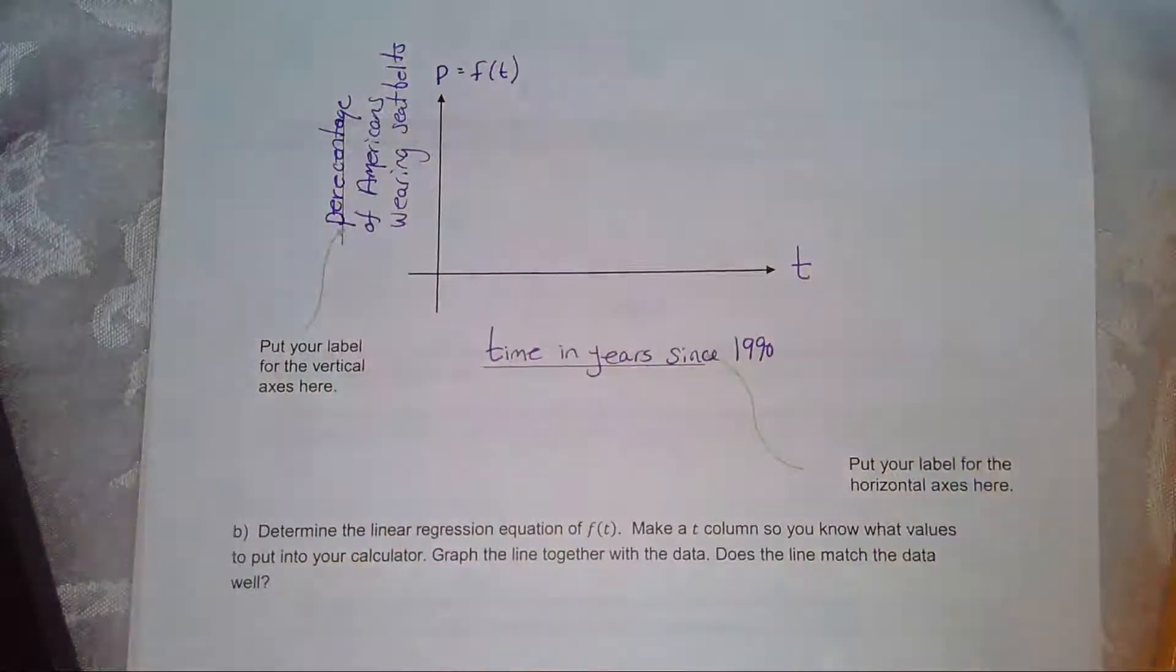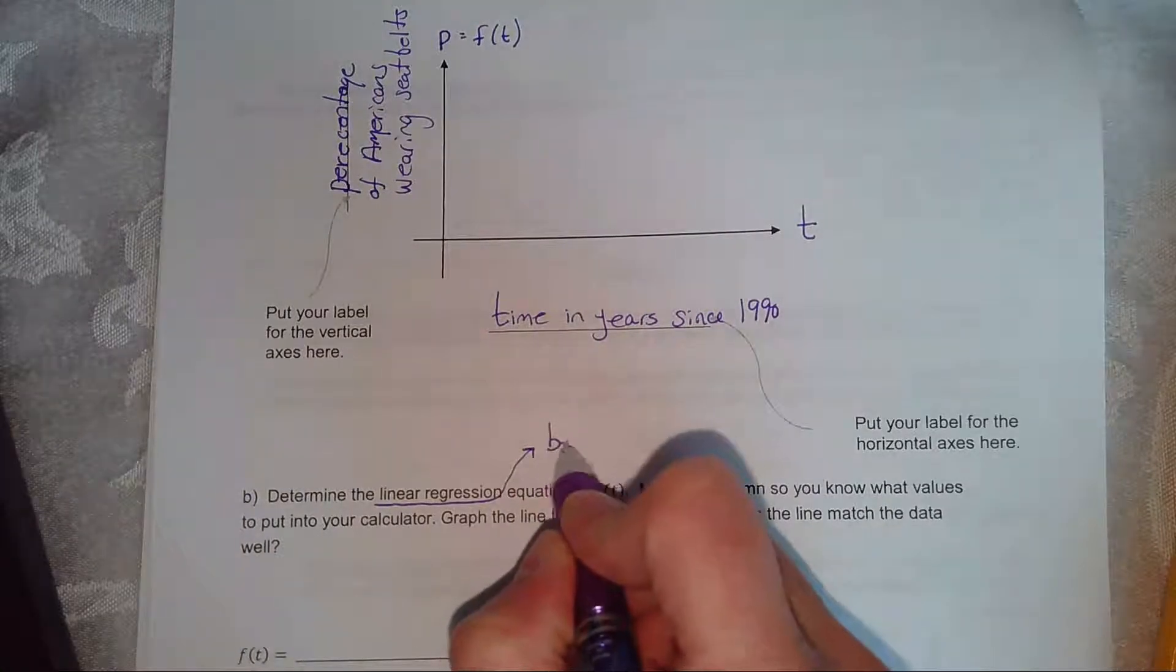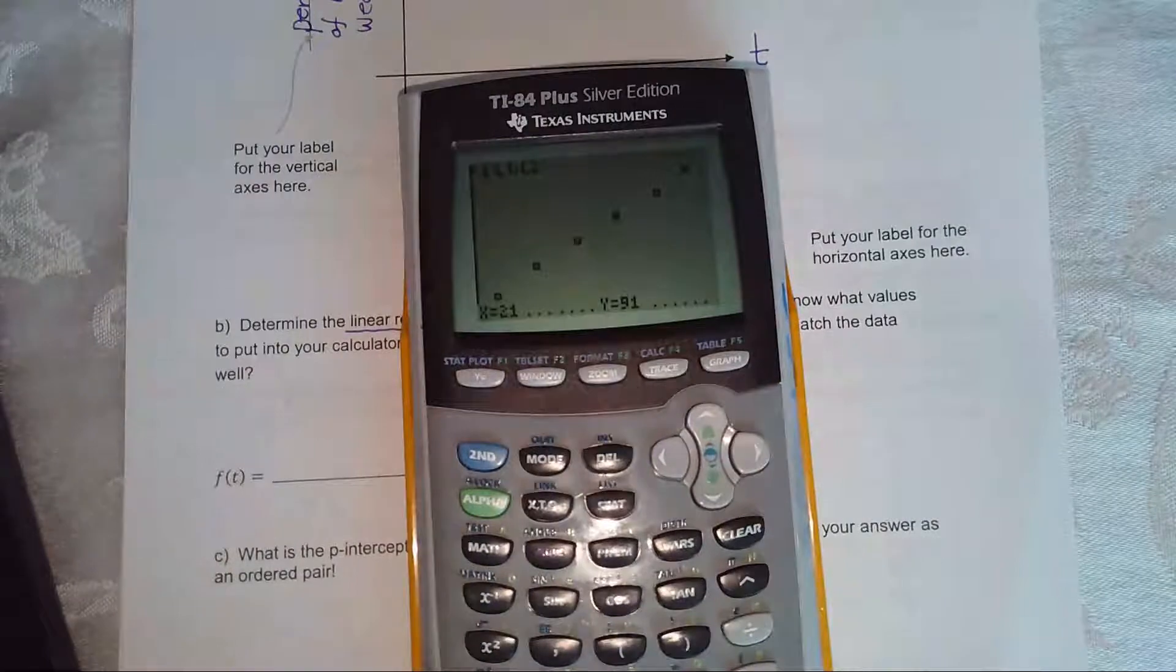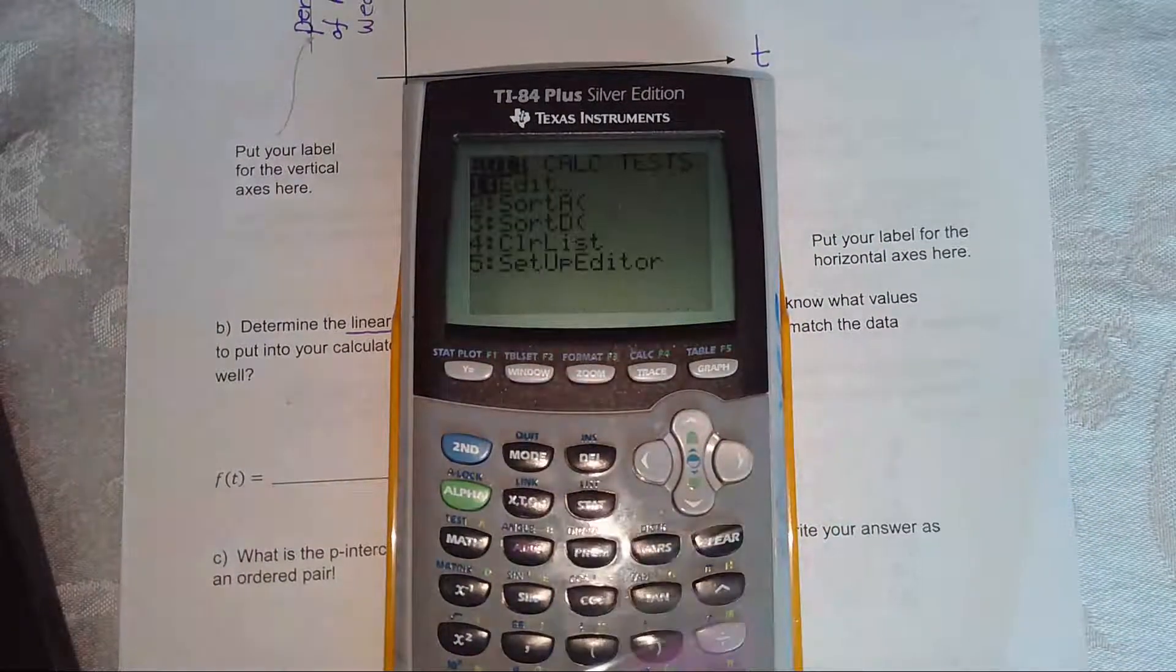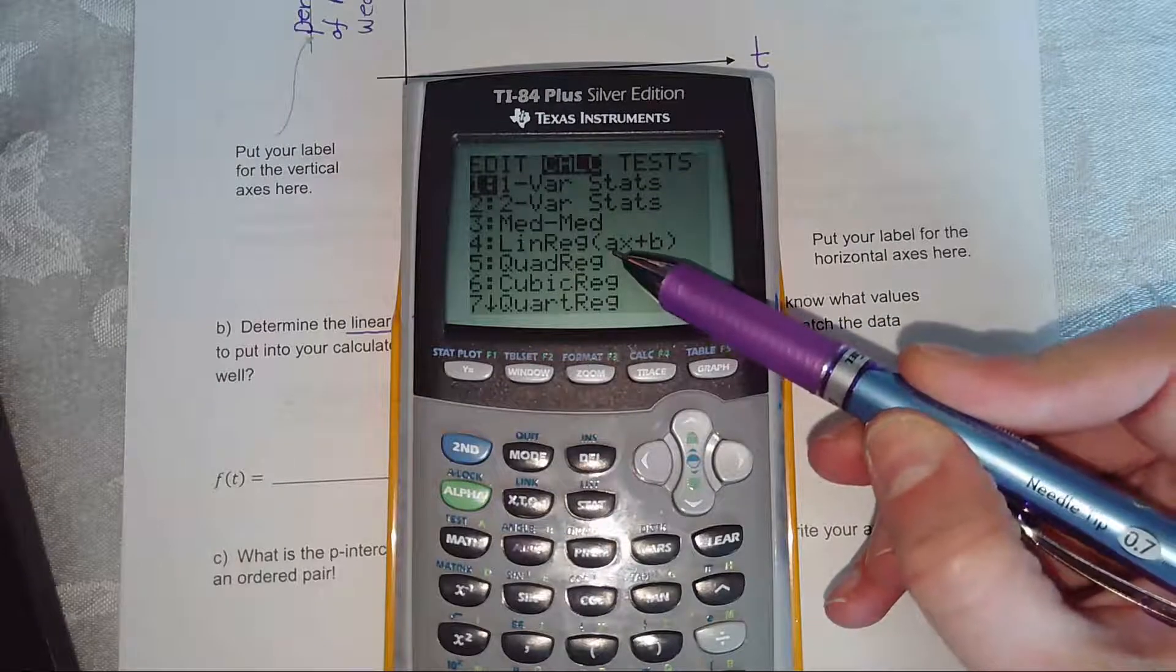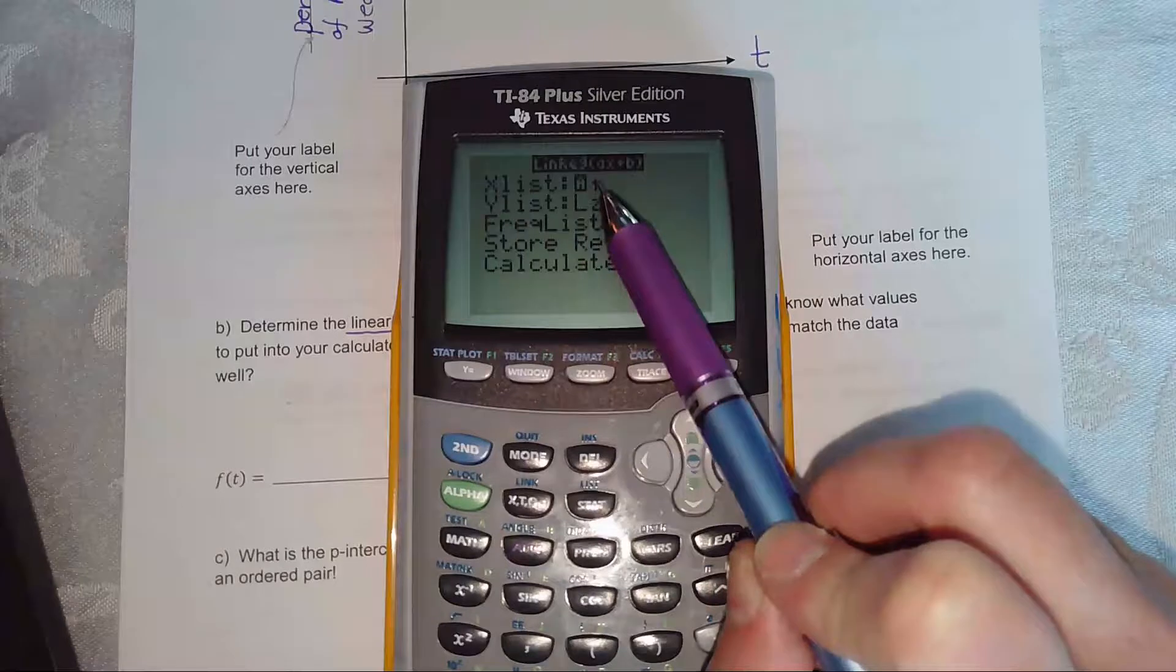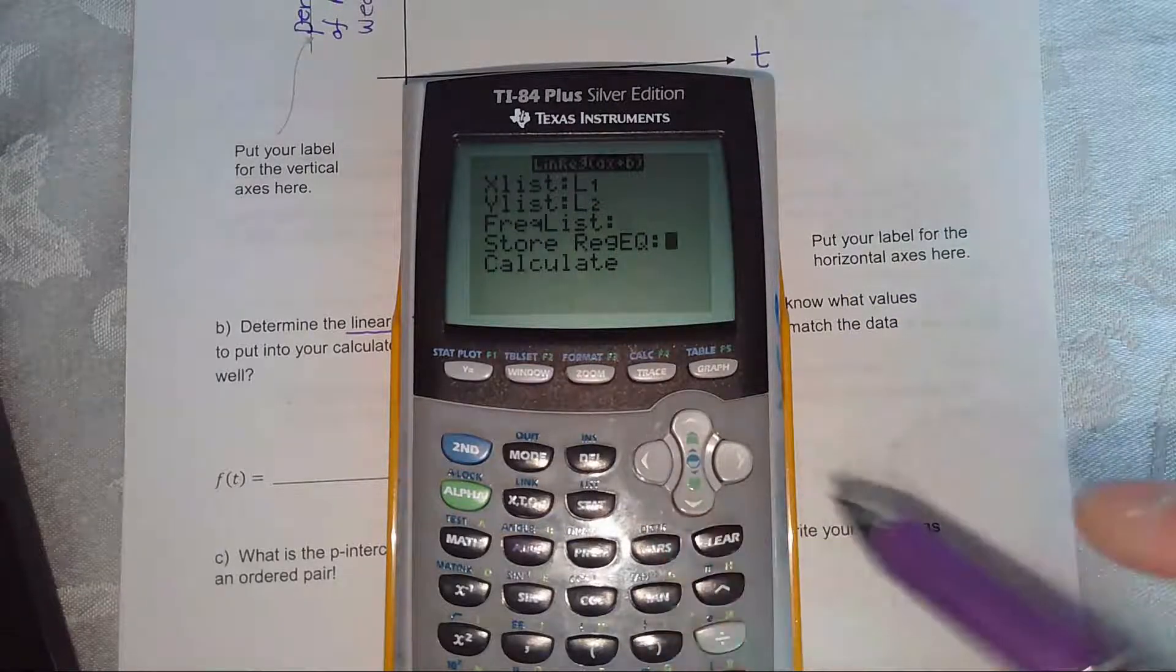So the next question, determine the linear regression equation. What the linear regression equation is, is what's called the best fit line. And it's considered a model of your data that best fits the points that you're given. It comes closest to all of your data values. So to calculate that, we're going to hit stat, and then we're going to arrow over to calc. And do you see linear regression? Instead of mx plus b, it has ax plus b. So arrow down. And then just make sure that again, the x list is L1 and the y list is L2.